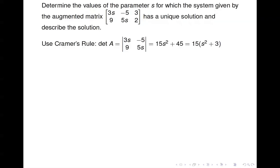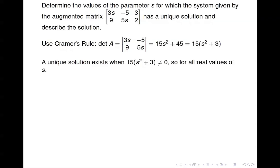We know the system has a unique solution when the determinant is not zero, because if the determinant is not zero then A is invertible and there's a unique solution. If we take the determinant of the coefficient part of that matrix, we get 15(s² + 3). Note that 15(s² + 3) is never equal to zero for any real value of s, because s² + 3 is always positive. So this system has a unique solution for all values of s.